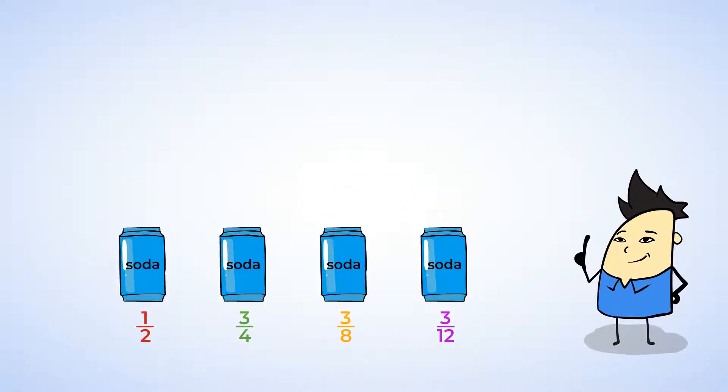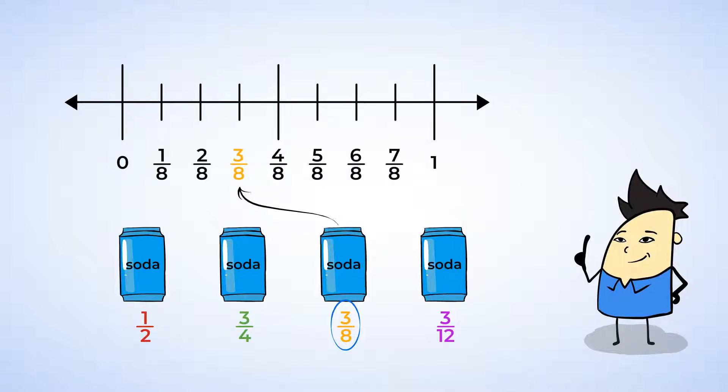Okay, now let's look at the can that is three-eighths full. And that goes here on the number line. Half of eight is four, so one-half is the same as four-eighths. And that goes here on the number line. And since three-eighths is less than four, we know that that one is less than one-half. And this means that one-half is greater than three-eighths.